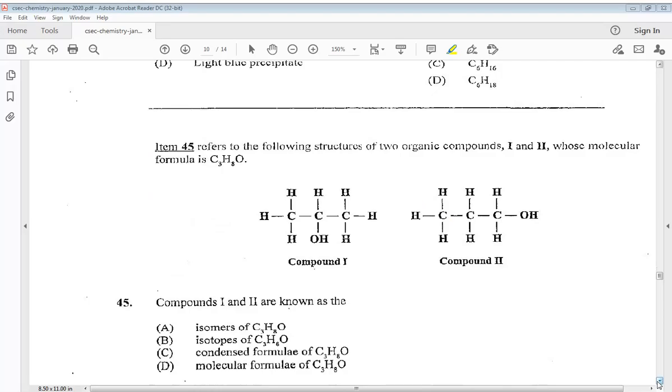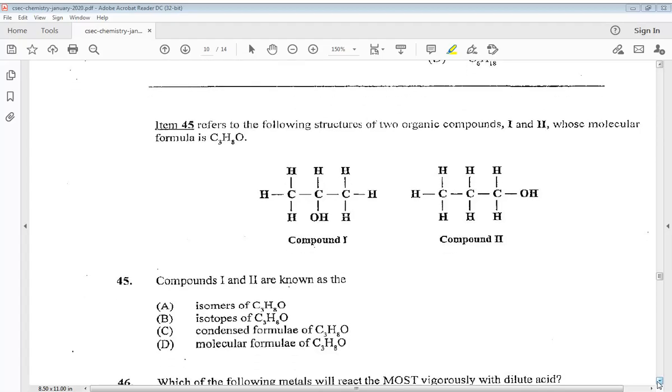Question 45 refers to the following structures of two organic compounds, compounds 1 and 2 whose molecular formula is C3H8O. Compounds 1 and 2 are known as A isomers of C3H8O.